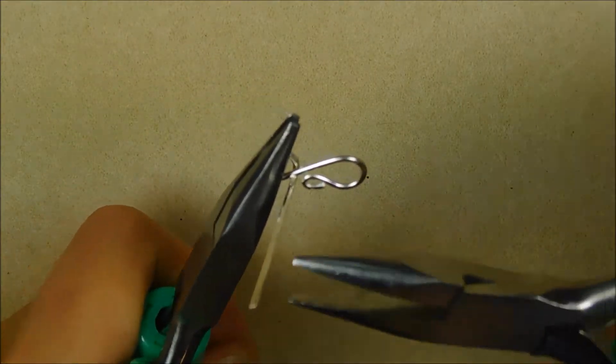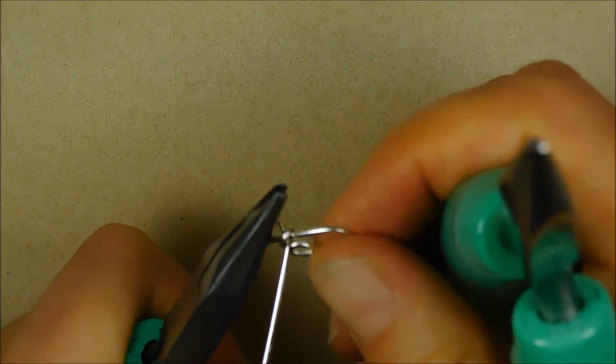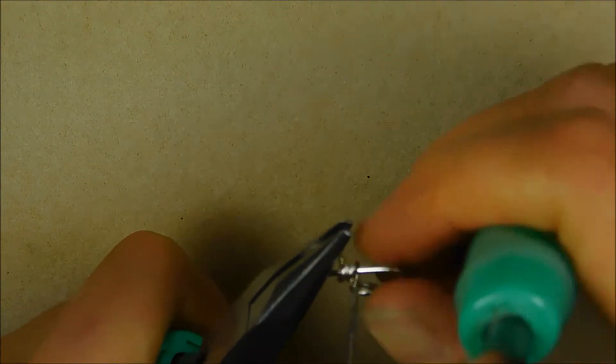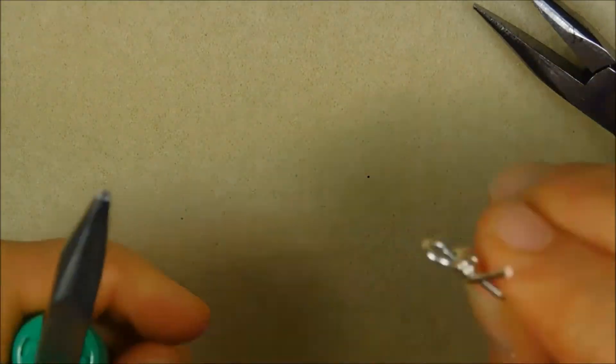This next part is exactly like making a wrapped loop eye pin. Holding the loop firmly in one pair of pliers parallel to the wire, use the other pair of pliers to wrap the remaining wire around the hook in two or three rotations. I usually do three.